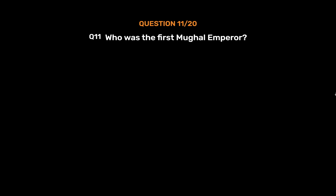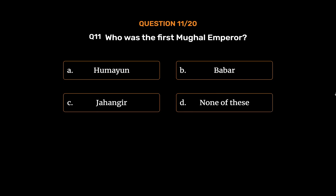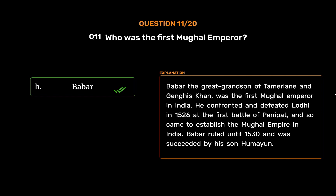Question 11: Who was the first Mughal emperor? Option A: Humayun. Option B: Babur. Option C: Jahangir. Option D: None of these. The correct answer is Option B, Babur. Babur, the great-grandson of Tamerlane and Genghis Khan, was the first Mughal emperor in India. He confronted and defeated Lodhi in 1526 at the First Battle of Panipat and established the Mughal Empire. Babur ruled until 1530 and was succeeded by his son Humayun.